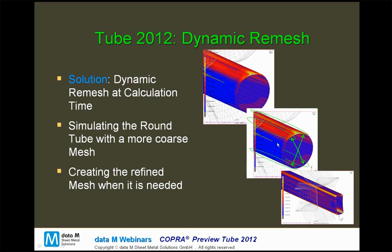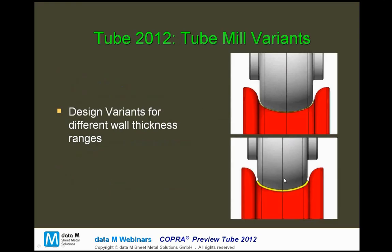The dynamic remesh function means we simulate up to the round tube with a rather rough mesh, which is sufficient for that calculation. Then, at calculation time, we refine the mesh in the desired positions to form the shaped tube — in this case a rectangular tube. This saves calculation time for the main part of the mill and ensures refinement is done in the correct positions.